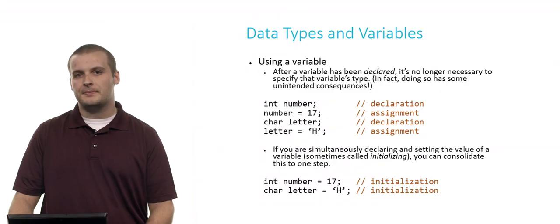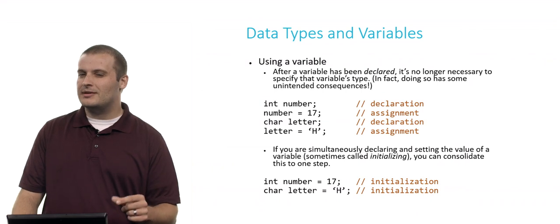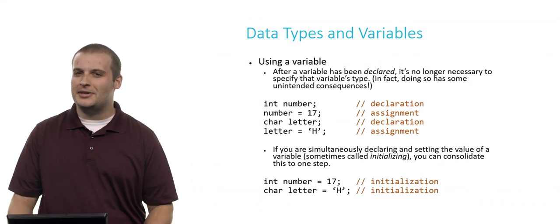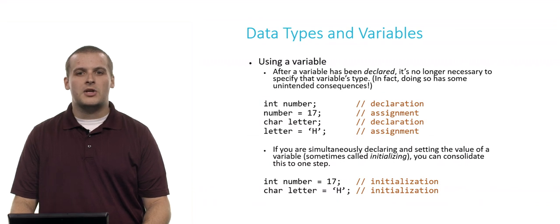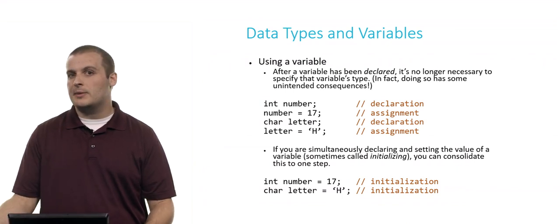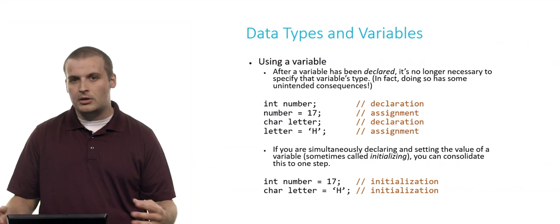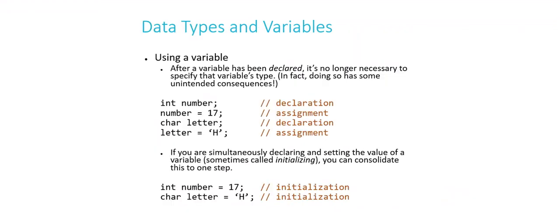All right, so we've created variables. How do we use them? After we declare a variable, we don't need to specify the data type of that variable anymore. In fact, if you do so, you might end up with some weird consequences. So here, I have four lines of code. Int number semicolon. That's a variable declaration. I've now created a variable called number that's capable of holding integer type values. The next line, I'm assigning a value to number. Number equals 17. I'm putting the number 17 inside of that variable. We can repeat the process again with letter, char letter semicolon. That's a declaration. Letter equals capital H. That's an assignment.